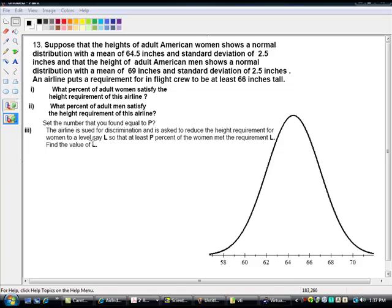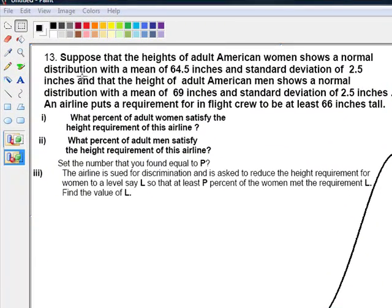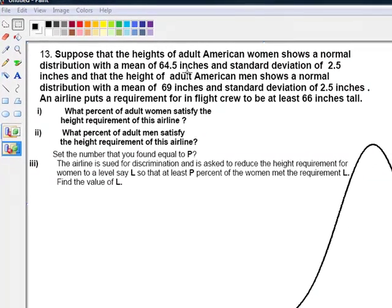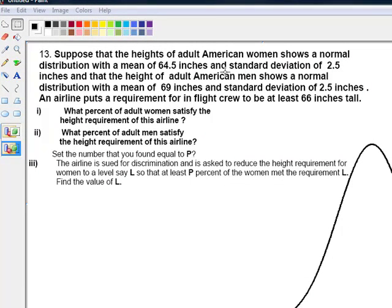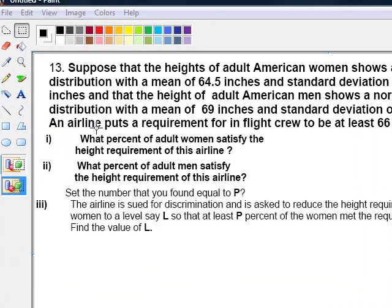Our next difficulty is this. We are given that the heights of adult American women shows a normal distribution with a mean of 64.5 inches and a standard deviation of 2.5 inches. And for the men, the distribution is again normal with these two parameters. An airline has put a requirement that the flight, the in-flight crew,